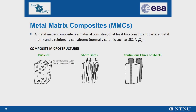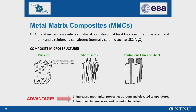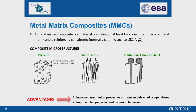The reinforcement of metals can have many different objectives, for example increased mechanical properties at room and elevated temperatures, or improved fatigue, wear, and corrosion behaviour. The density of these reinforcing constituents is slightly higher than that of aluminium or magnesium, so the weight of the MMC component increases to a small extent. However, this drawback is generally considered negligible compared to the superior mechanical properties given by the addition.